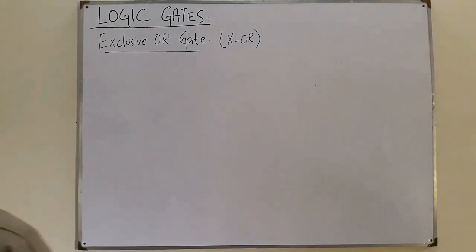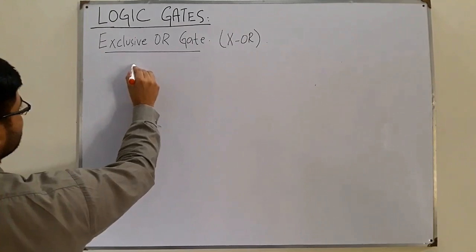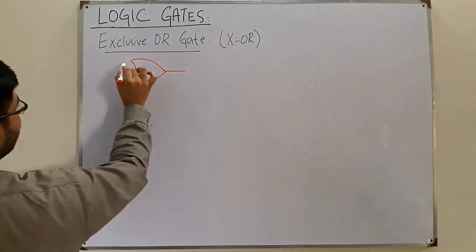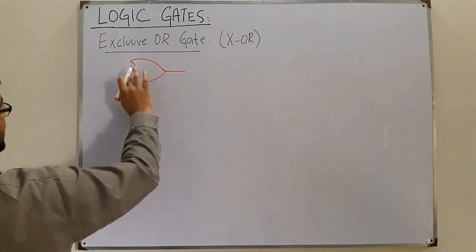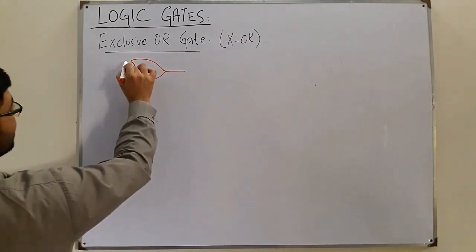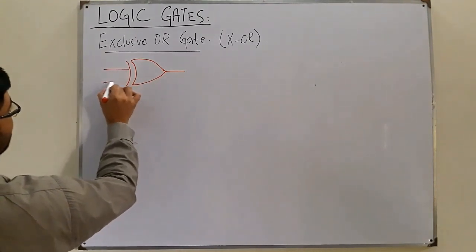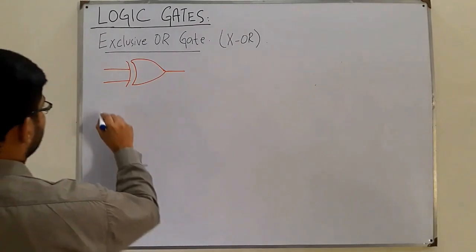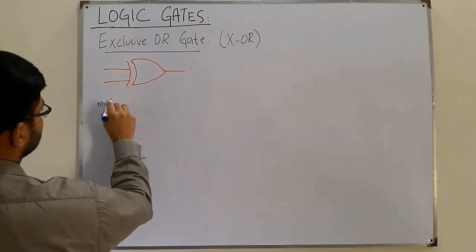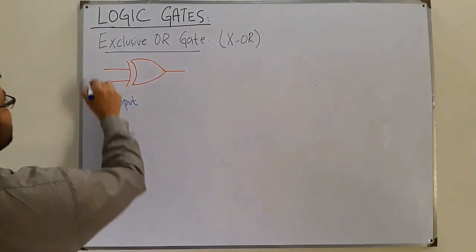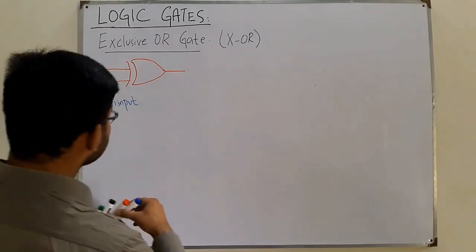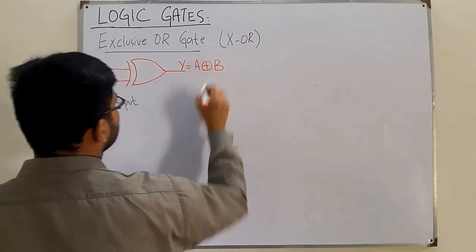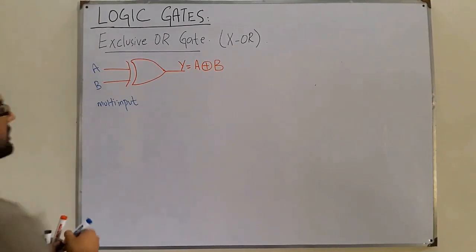The symbol for the XOR gate is similar to the OR gate but with an extra curved line added. It is a multi-input gate with a single output. If we have inputs A and B, the output is Y, which is a function Y equals A XOR B. The plus sign in a circle shows the XOR operation.